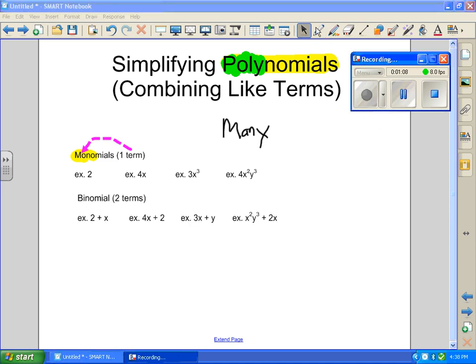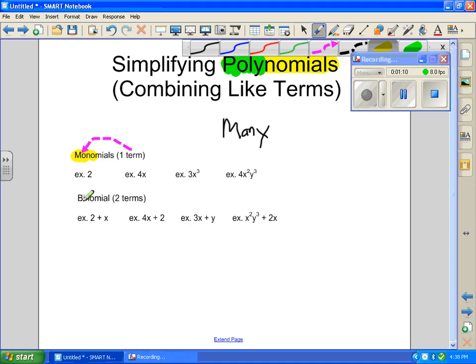Now, the next one is a binomial. Now, binomials, in the prefix, bi, means 2. So binomial has two terms.